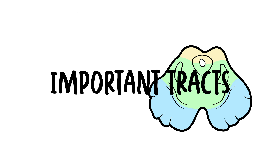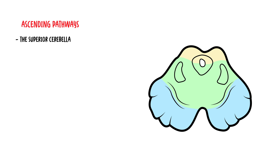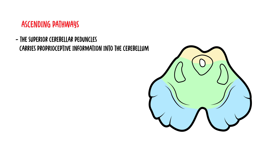Some important tracts. As well as the descending tracts which we mentioned previously, found in the crus cerebrae — the most ventral part of the midbrain — the midbrain also provides passage for the ascending pathways, so up through the brainstem and the midbrain to the brain. These include the superior cerebellar peduncles, which carry proprioceptive information into the cerebellum.